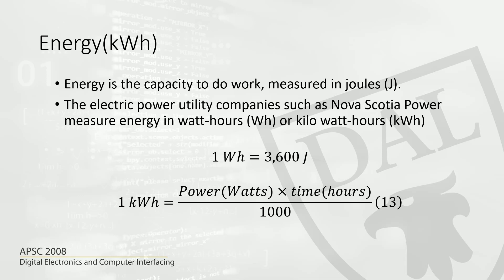We are almost done with module one. We know power, voltage, and current, and finally we need to know what energy is. Energy is the capacity to do work. It is often measured in joules, but we measure electrical energy in kilowatt hours. Utility companies like Nova Scotia Power, which we have here in the province, measure energy with a watt hour meter at your house, so that will have a reading in kilowatt hours.